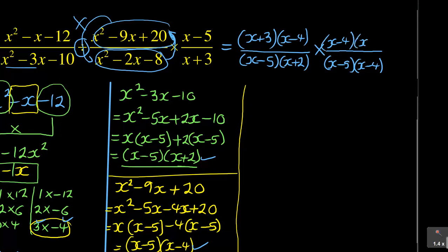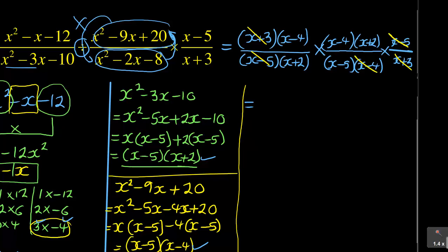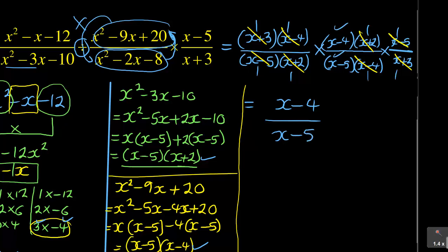And then lastly, times: we have (x − 5) over (x + 3). Now it's a matter of cancelling out what is common. I've got x minus 5, x plus 3, x minus 4, and x plus 2 appearing in both numerator and denominator. After cancelling, each cancels to 1. What is remaining is (x − 4) over (x − 5). So accordingly, this becomes the final answer.